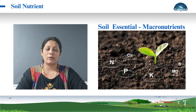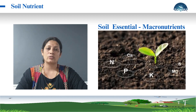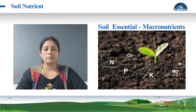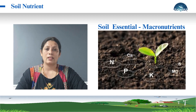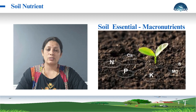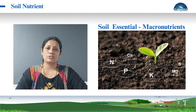Macronutrients are called essential nutrients, which are required by the plant at different growth stages, without which the plant cannot survive. These macronutrients include nitrogen, phosphorus, potassium, magnesium, calcium, and sulfur.